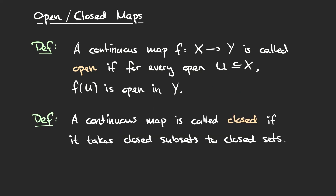Next, let's look at the definition for a closed map. This is pretty much the same definition as for an open map, except that we replace the word open with the word closed. We call a continuous map between two spaces closed if it takes closed subsets in the first space to closed subsets in the second space.